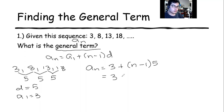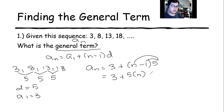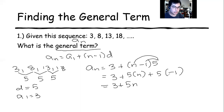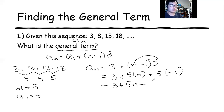What we're going to do next is perform multiplication using the distributive method. So 5 times n, then plus 5 times negative 1. So 5 times n is 5n. Then 5 times negative 1: positive times negative is negative, so negative 5.